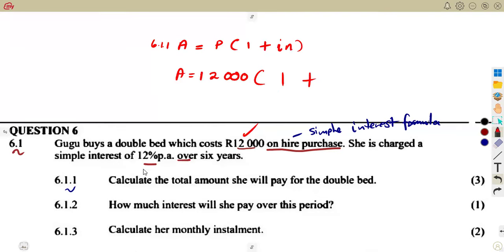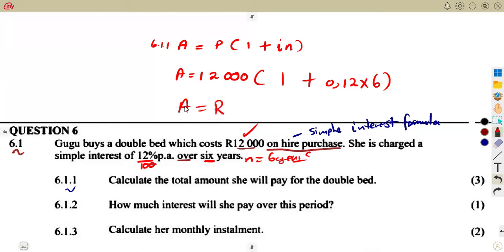The interest rate as a decimal: 12 divided by 100 gives 0.12. The number of years is six. So the calculation is R12,000 into (1 + 0.12 × 6), which is a straightforward substitution. That gives us R20,640, which is the total over six years.